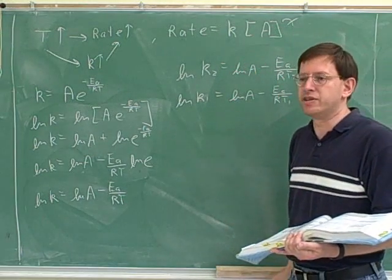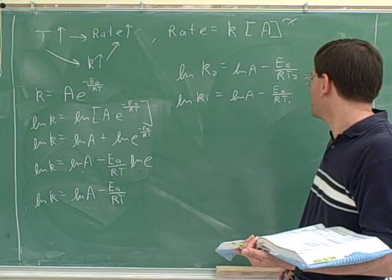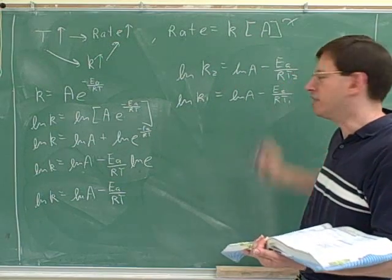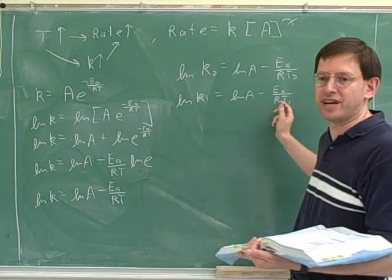So now I'm just applying this to two different rows of data. We could look at what the rate constant is at one temperature, and then we could look at what the rate constant is for a different temperature.